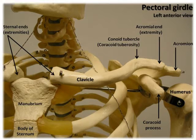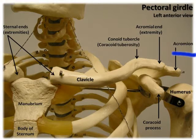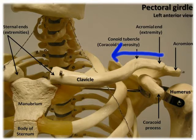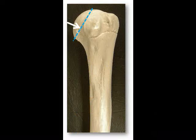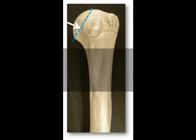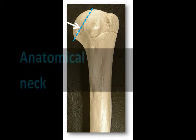A great way to identify the left humerus from the right humerus is the orientation of the head — it always points medially towards the scapula. The oblique groove just distal to the head is the anatomical neck.